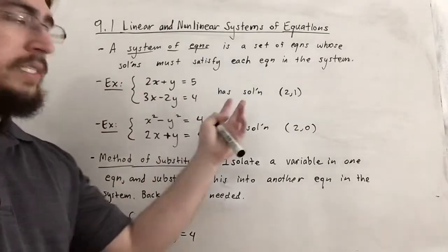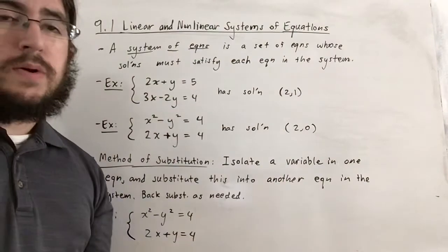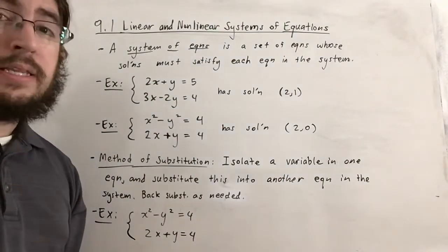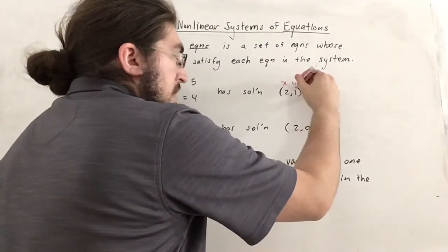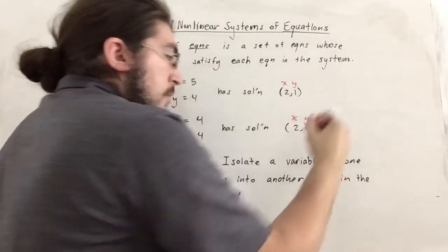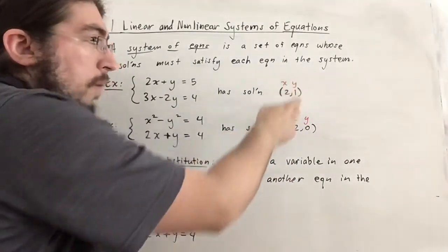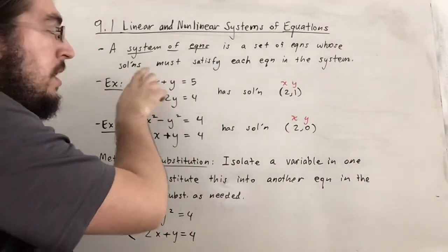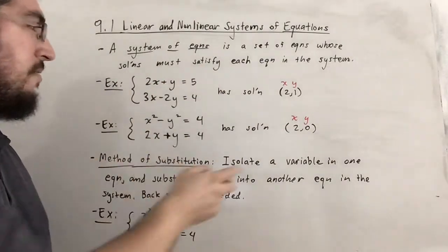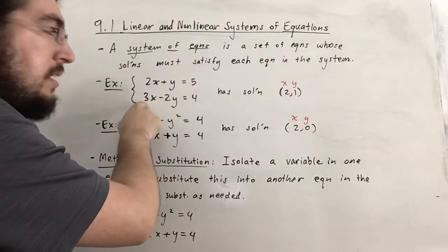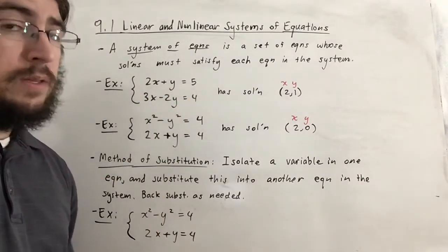This system of equations has a solution (2,1), and this system of equations has a solution (2,0). We can check by plugging in these values. The solutions here are ordered pairs representing the values of x and y respectively. When you plug in x=2 and y=1 in the first equation, you get 2 times 2 plus 1, which is 5. For the second equation, 2 times 3 is 6, minus 2 times 1 is 2, and 6 minus 2 is 4 indeed.